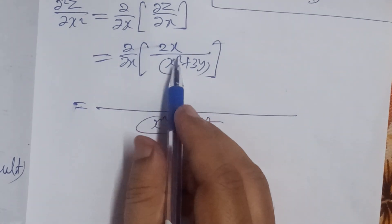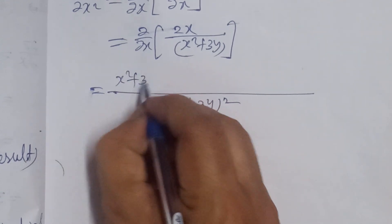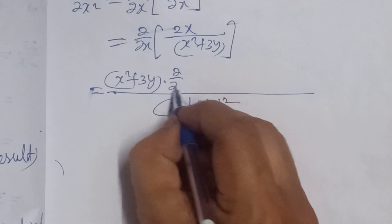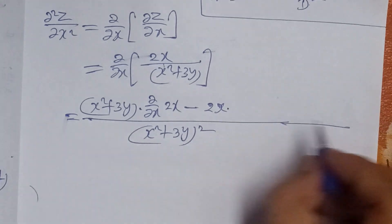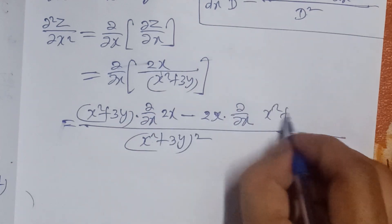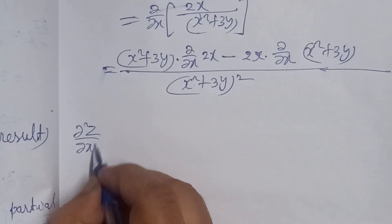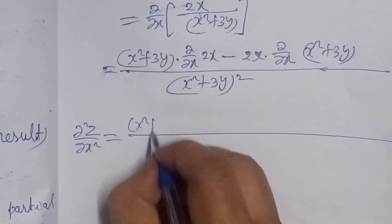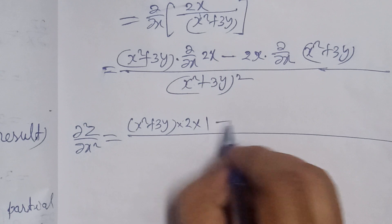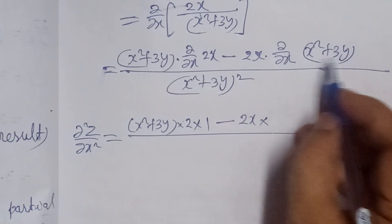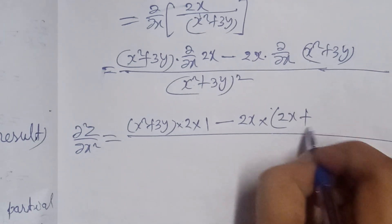Applying the quotient rule: the denominator squared is (x² + 3y)². In the numerator, we write the denominator (x² + 3y) times the derivative of the numerator (2x), minus the numerator (2x) times the derivative of the denominator (x² + 3y). Differentiating: 2 is constant, derivative of x with respect to x is 1; and differentiating x² + 3y gives 2x plus 0.